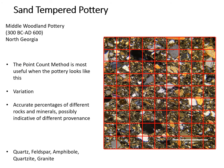The point count method works well when the pottery is composed of many different kinds of rocks and minerals. This slide shows a sand-tempered Middle Woodland vessel from northern Georgia. The sand contains quartz, feldspar, amphiboles, quartzite, and granite.